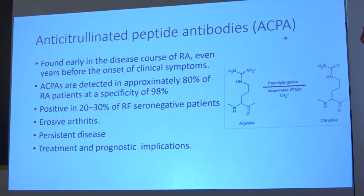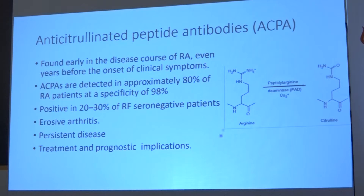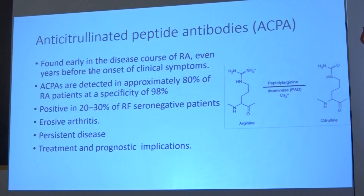In recent years, a new key antibody has been introduced: anti-citrullinated peptide antibodies, or ACPA, also called anti-CCP. Citrulline is produced in the body after post-translational modification of arginine by the enzyme peptidyl-arginine deiminase. These citrullinated peptides are present in various parts of the body and found in high amounts in the inflamed synovium of RA patients. Anti-CCP antibodies play a key role in RA and have been found early in the disease course, even years before clinical symptoms appear.